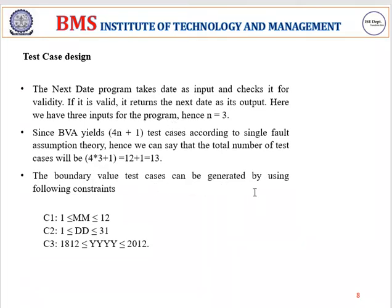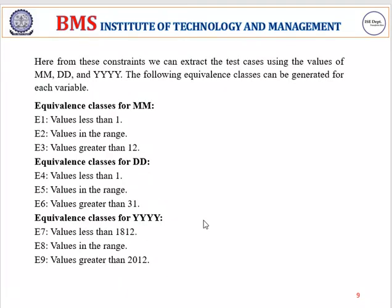Boundary value test cases are generated using equivalence classes within which you check the boundaries. For month, you check between 1, less than 1, and greater than 12. For date, you check less than 1 and greater than 31. For year, the boundaries are 1812, less than 1812, and greater than 2012.